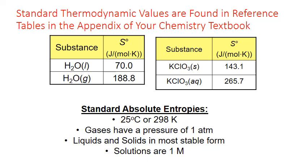Here are a few examples of standard absolute entropies from a reference table. Liquid water has a standard absolute entropy of 70 joules per mole Kelvin, while gaseous water has 188.8 joules per mole Kelvin — as expected, the gas phase has a higher value reflecting greater dispersal of matter and energy. You'll also find solids and solutions: solid potassium chlorate versus potassium chlorate dissolved in water (aq), where the entropy of the solution is higher as the particles are more dispersed.